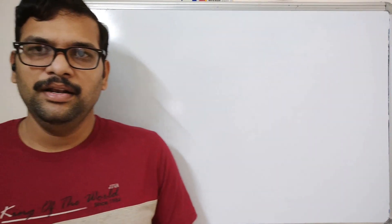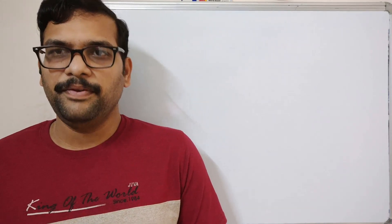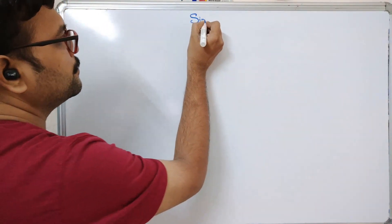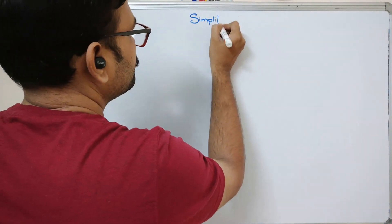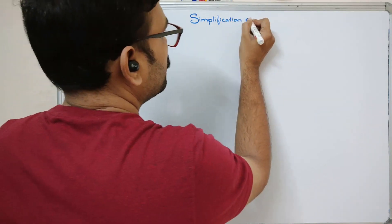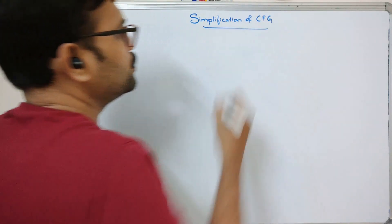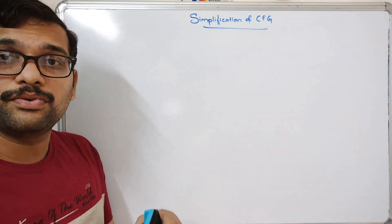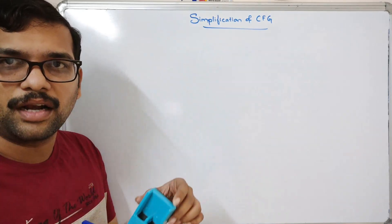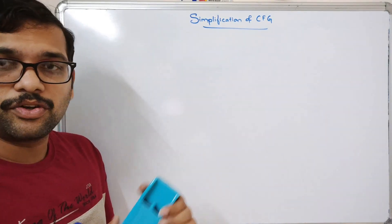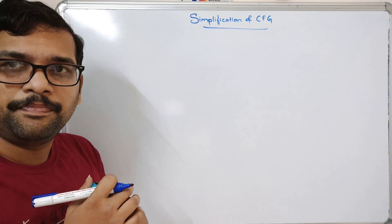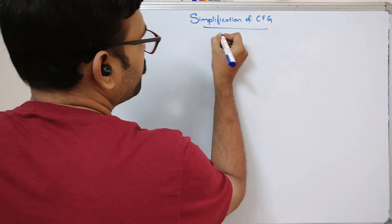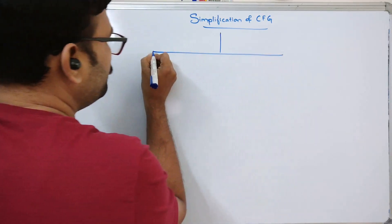Hello friends, welcome back to our channel. In today's session we'll discuss one more topic in automata theory: the simplification of context-free grammar. In the previous session we discussed context-free grammar, how to represent production rules and how it differs from regular grammar. Now in this session we'll see the simplification — how we can reduce the production rules. This can be done in three ways.